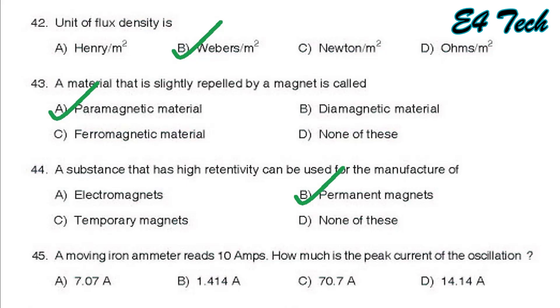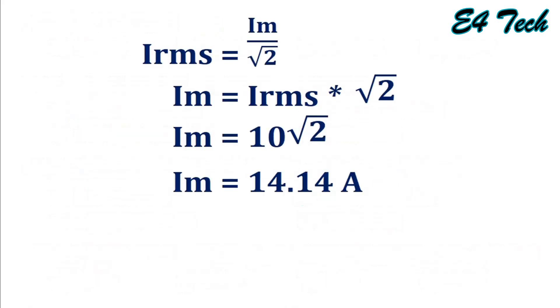Next, a moving iron ammeter reads 10 amp. What is the peak current of the oscillation? RMS value is equal to 10 ampere, therefore peak value is equal to IM by root 2. That is peak value is equal to root 2 times RMS value. That is root 2 into 10. That is option D, 14.14 ampere.